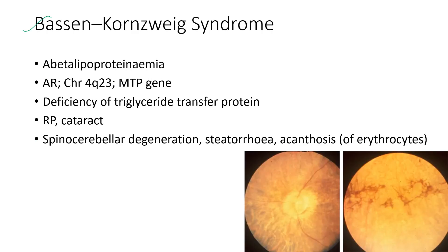Next is Bassen-Kornzweig syndrome, also known as abetalipoproteinemia. It is an autosomal recessive condition with deficiency of triglyceride transfer protein. The ocular features include retinitis pigmentosa and cataract. The systemic features include spinocerebellar degeneration, steatorrhea, and acanthosis of erythrocytes. Fundus images show retinitis pigmentosa changes.